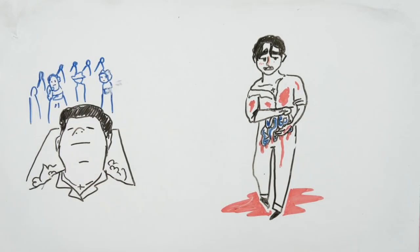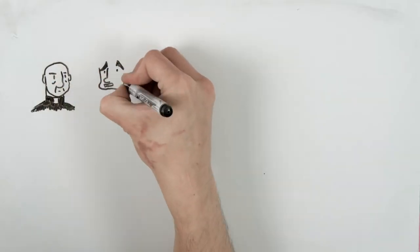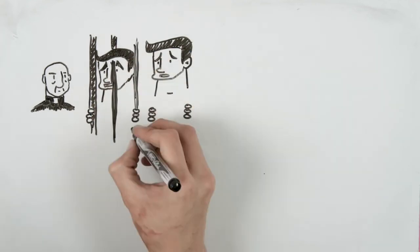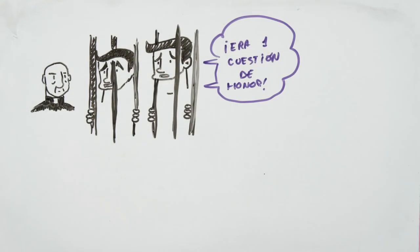Afterwards, a rudimentary autopsy was performed and the body was publicly exposed. The Vicario brothers confessed and went to jail for three years. They did not feel guilty as it was a matter of honor.